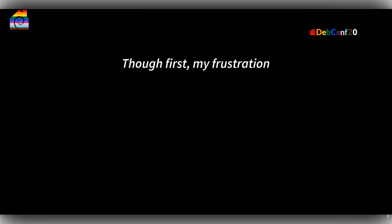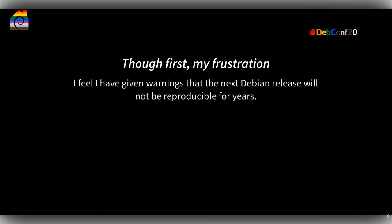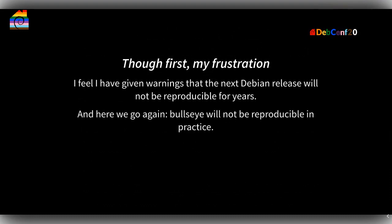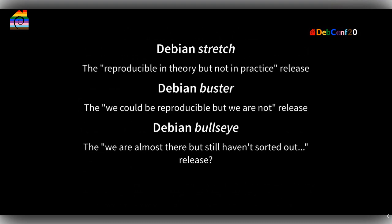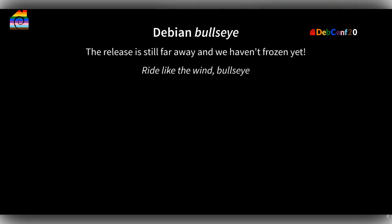My frustration is that I've been warned that the next Debian release will not be reproducible for some years now. Bullseye will not be reproducible in practice, and Bullseye will be released in about a year, frozen in February or something. This slide is from DebConf 19 in Brazil, where I said stretch was reproducible in theory but not in practice — because at that time, the debbuildpackage just got into sid and not much was rebuilt. Buster was more or less the same. And now we are at Bullseye, and it doesn't look too good in my opinion. But the release is still far away and we haven't frozen yet, so there's still a chance to fix this.